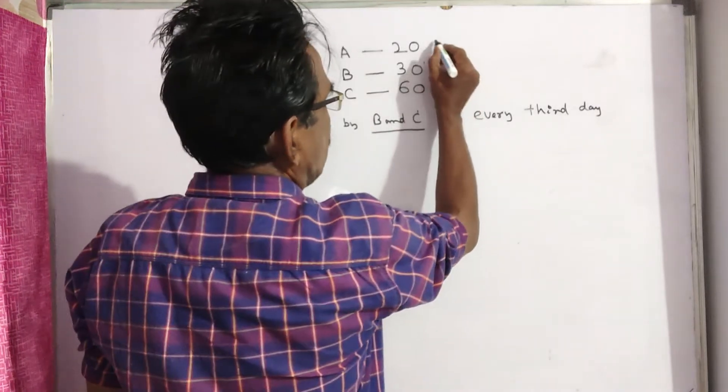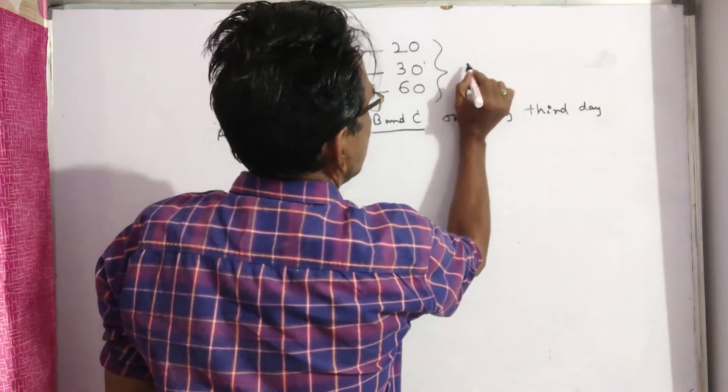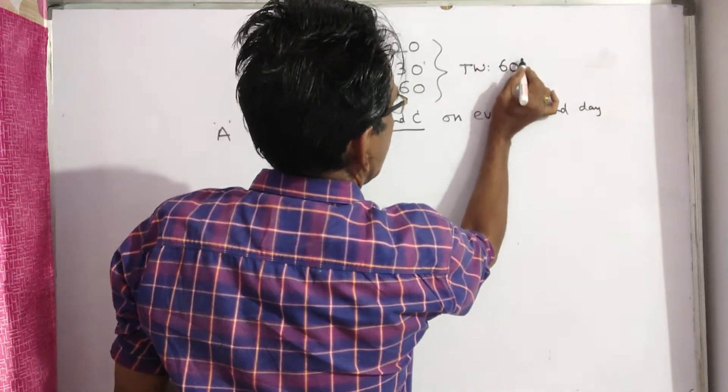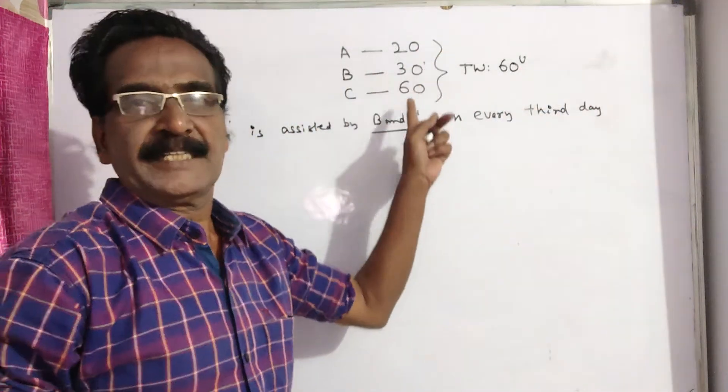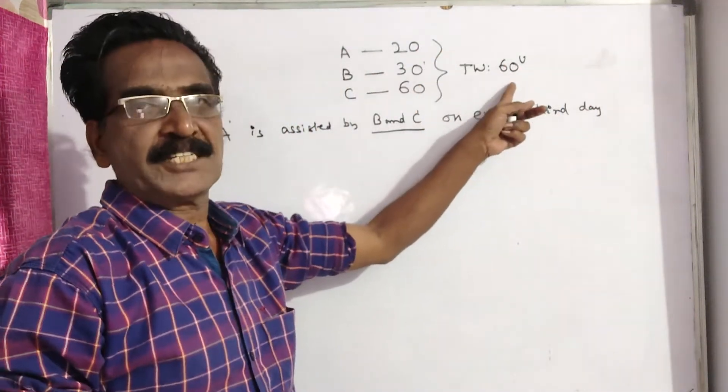Let us say the total work is 60 units, that is the LCM of 20, 30 and 60. So the total work is 60 units.